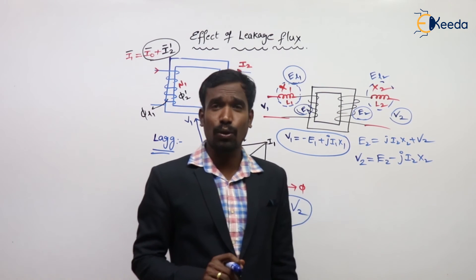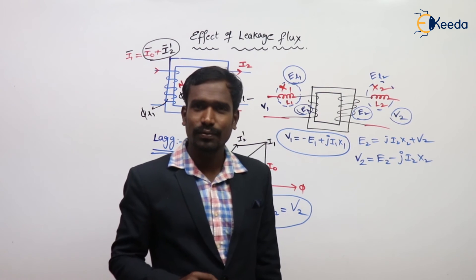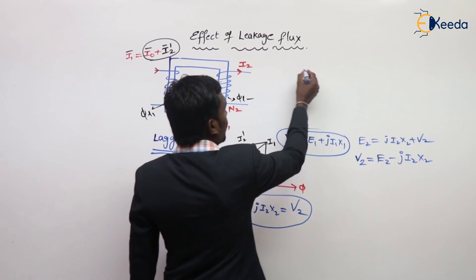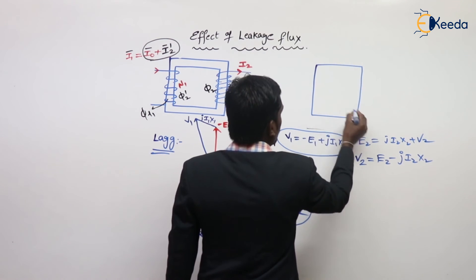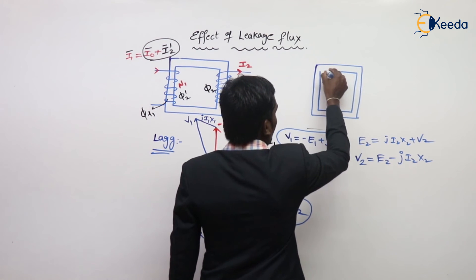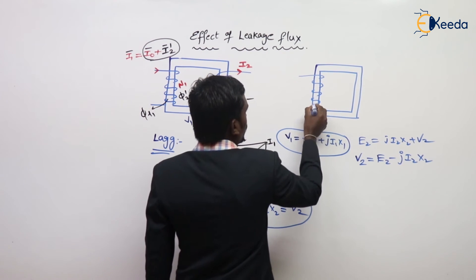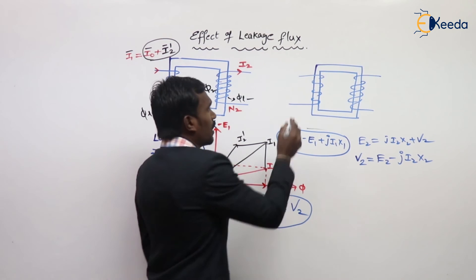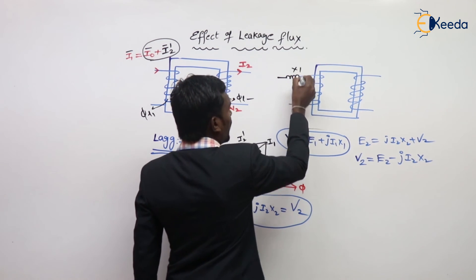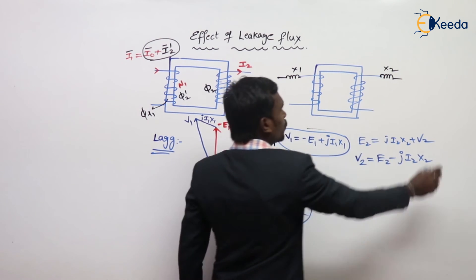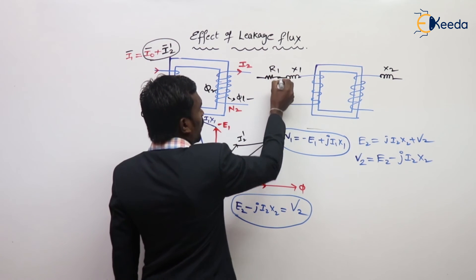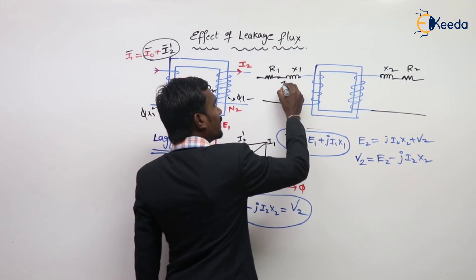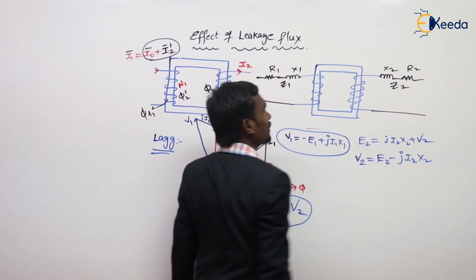Now, when the effect of resistance is also added — along with leakage flux — the fictitious reactances X1 and X2 combine with resistances R1 and R2 to form impedances Z1 and Z2 respectively.